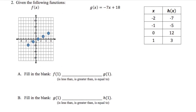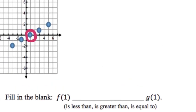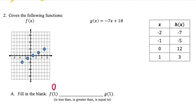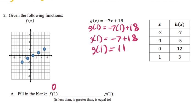Well, f(1) has an output of zero. When I look at the input of one, the output is zero. For g(1), I'm going to have to plug in one for x and then I'll simplify, finally giving me g(1) equals 11. Well, 11 is greater than zero, so g(1) is greater than f(1).